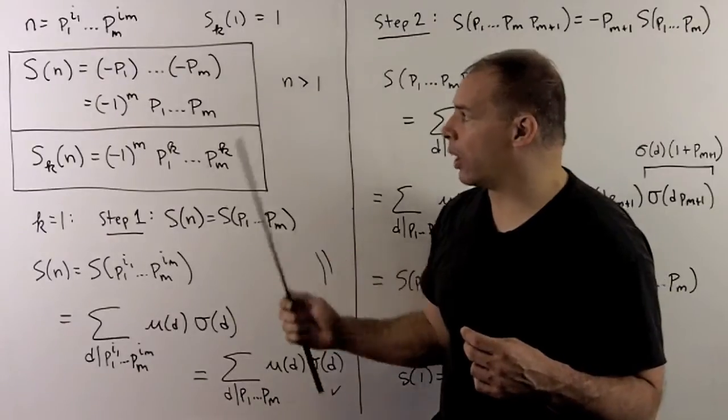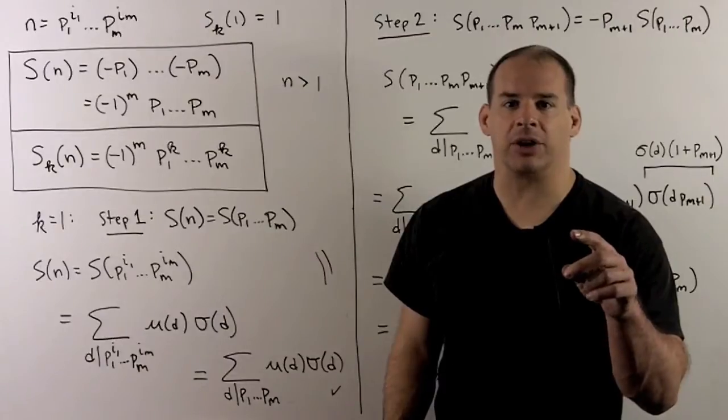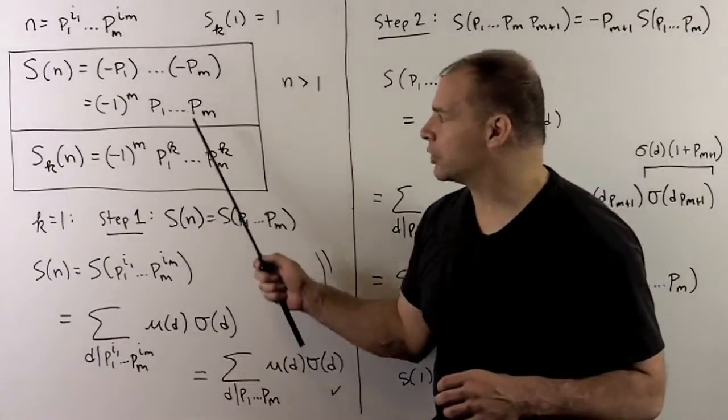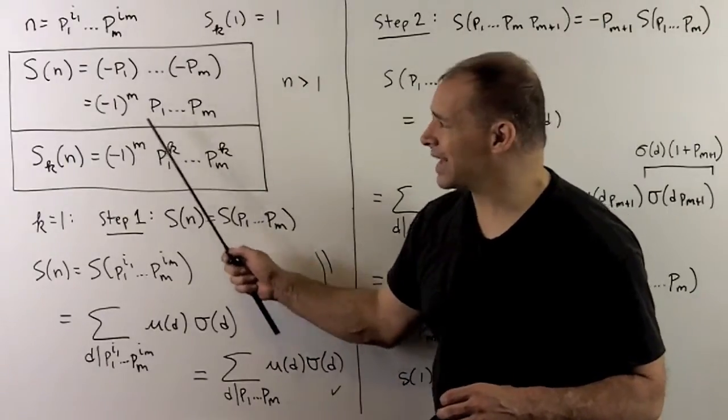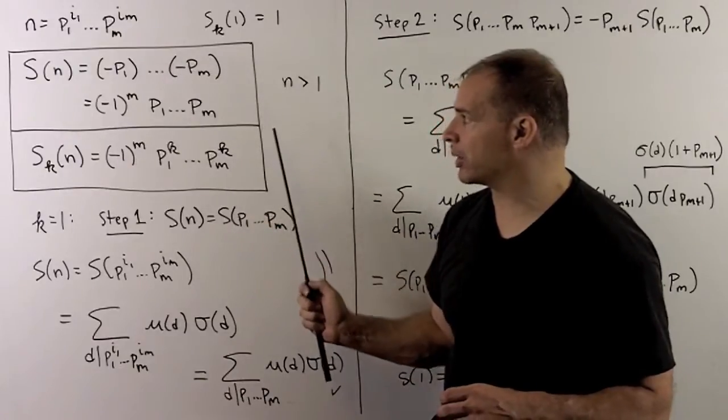For n greater than 1, S of n, what we're going to do is take each distinct prime factor, take the product, but each factor gets a minus sign. So p1 through pm times minus 1 to the number of distinct prime factors. So we just strip out the exponents.